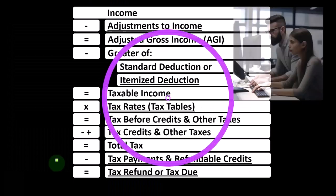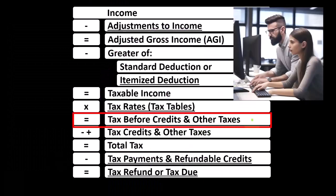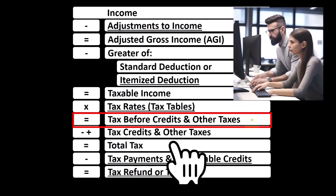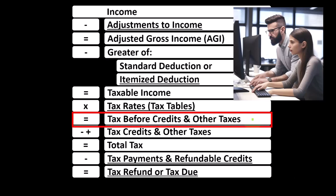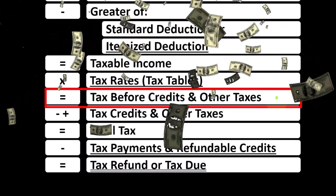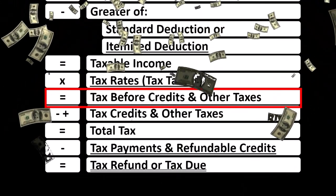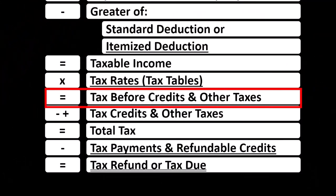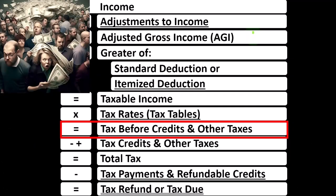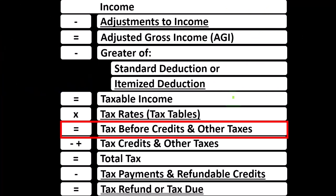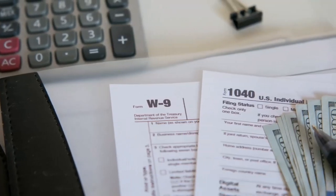Looking at the income tax formula, we're focused on tax before credits and other taxes. The first half of the income tax formula is in essence an income statement — income minus adjustments to income, which you can think of as the above-the-line deductions, getting us to adjusted gross income, minus the greater of the standard or itemized deductions to get to taxable income, similar to net income in a normal income statement.